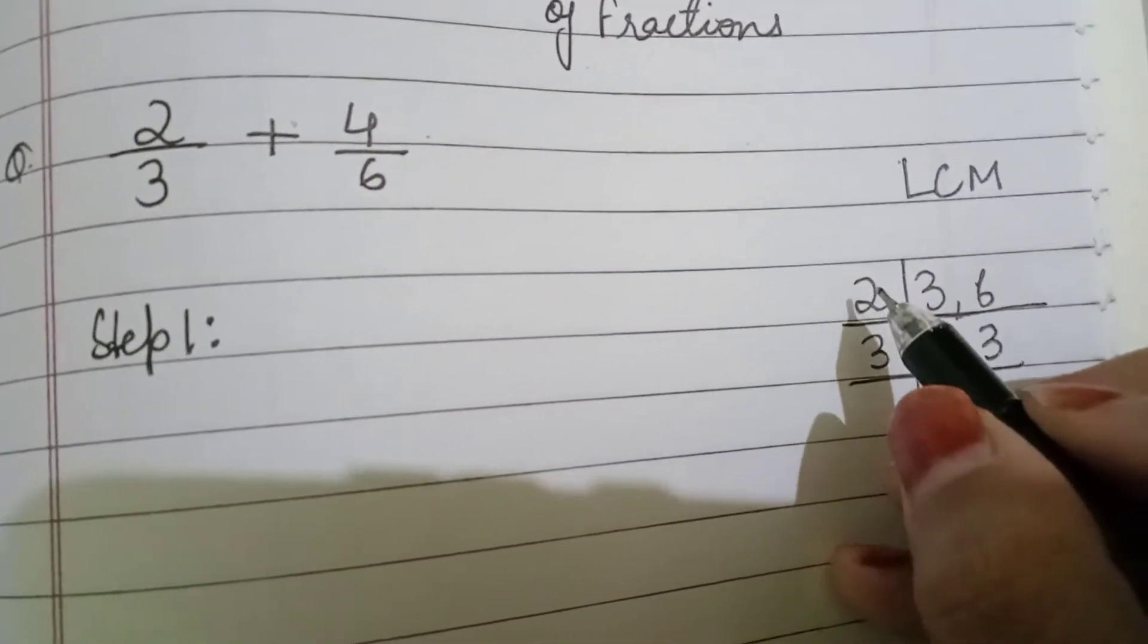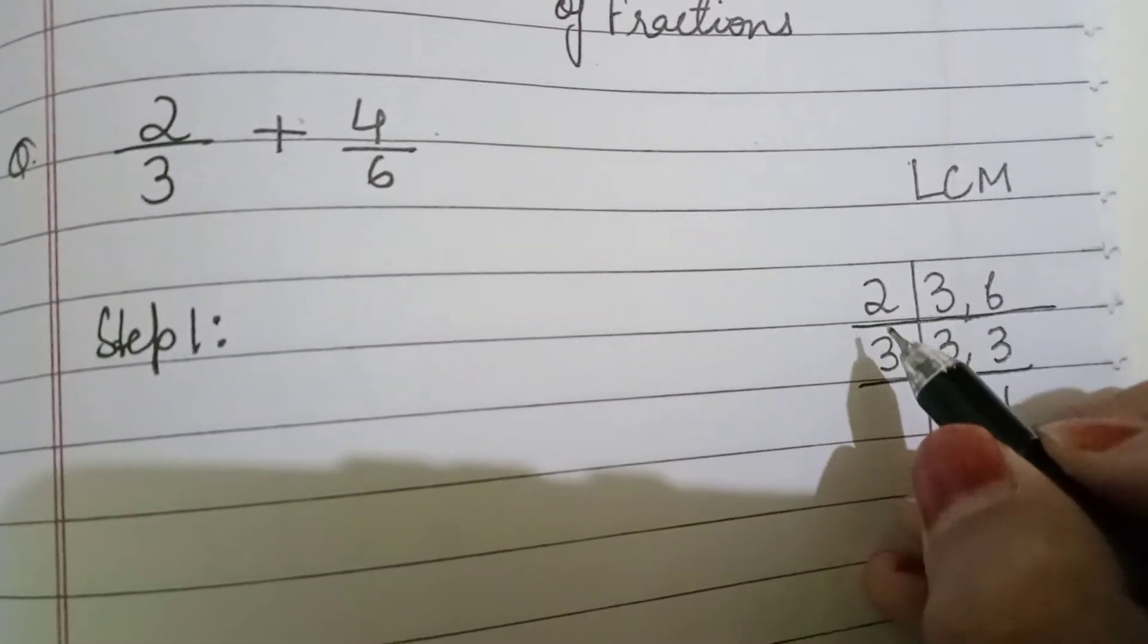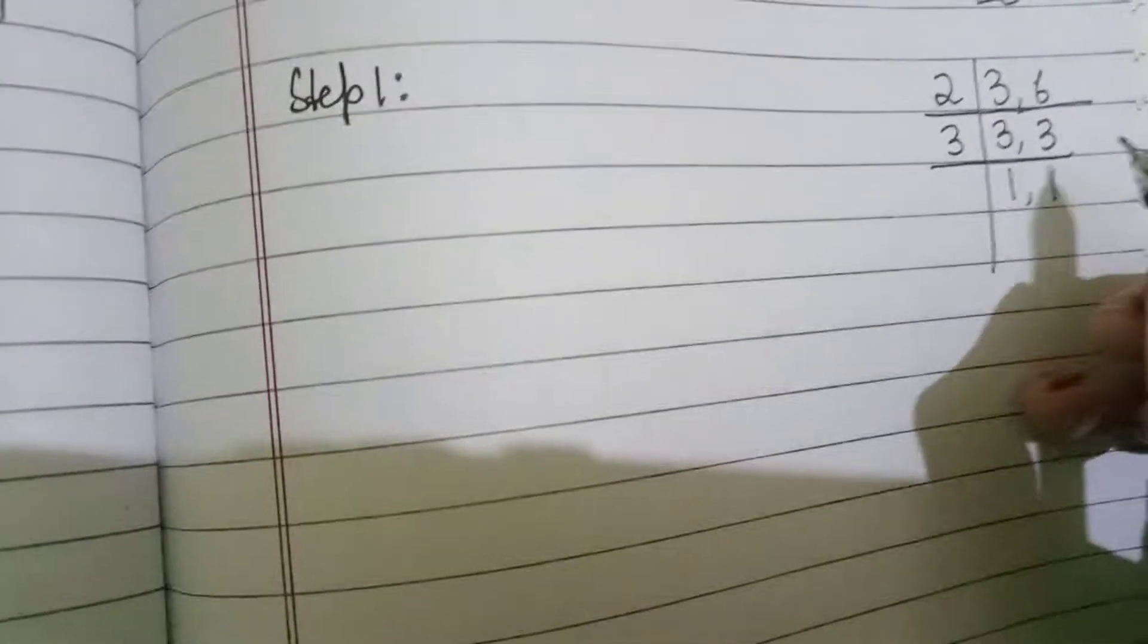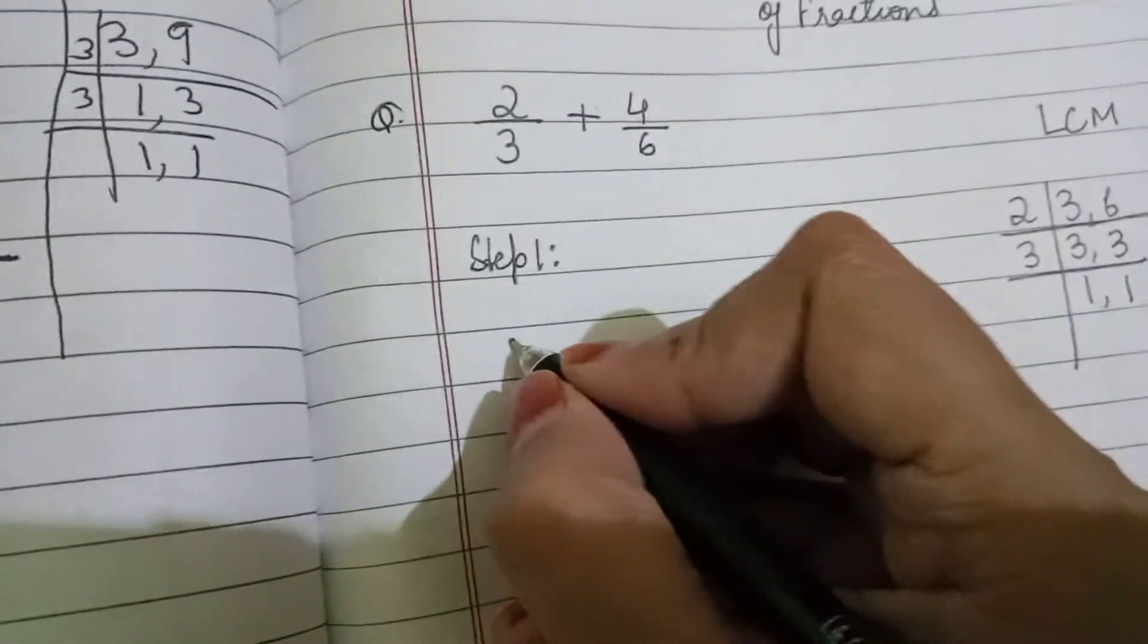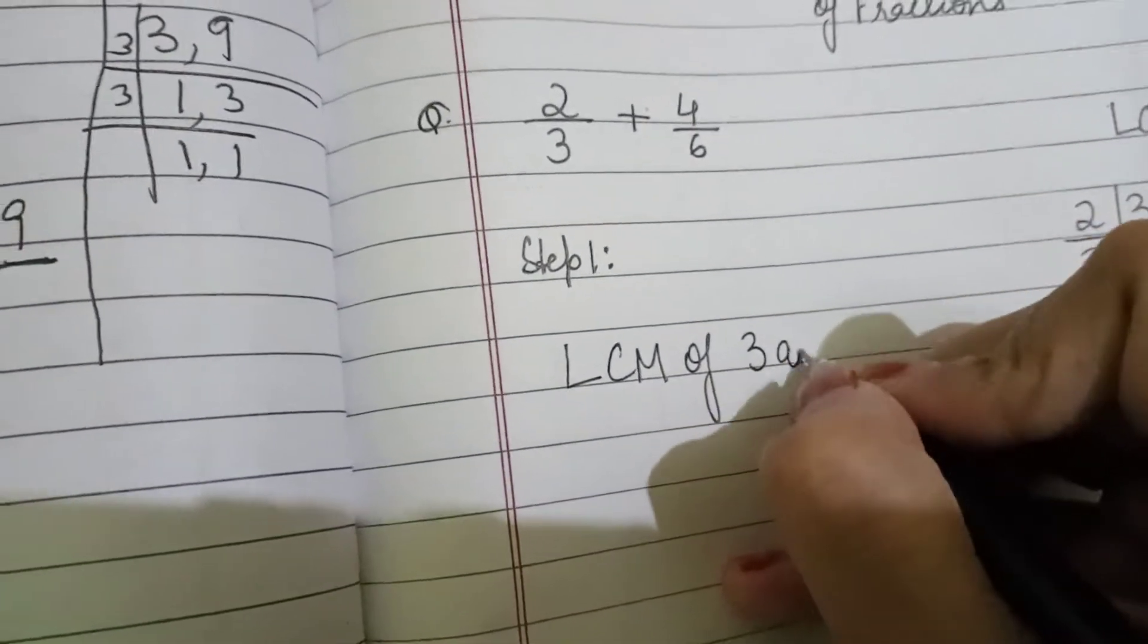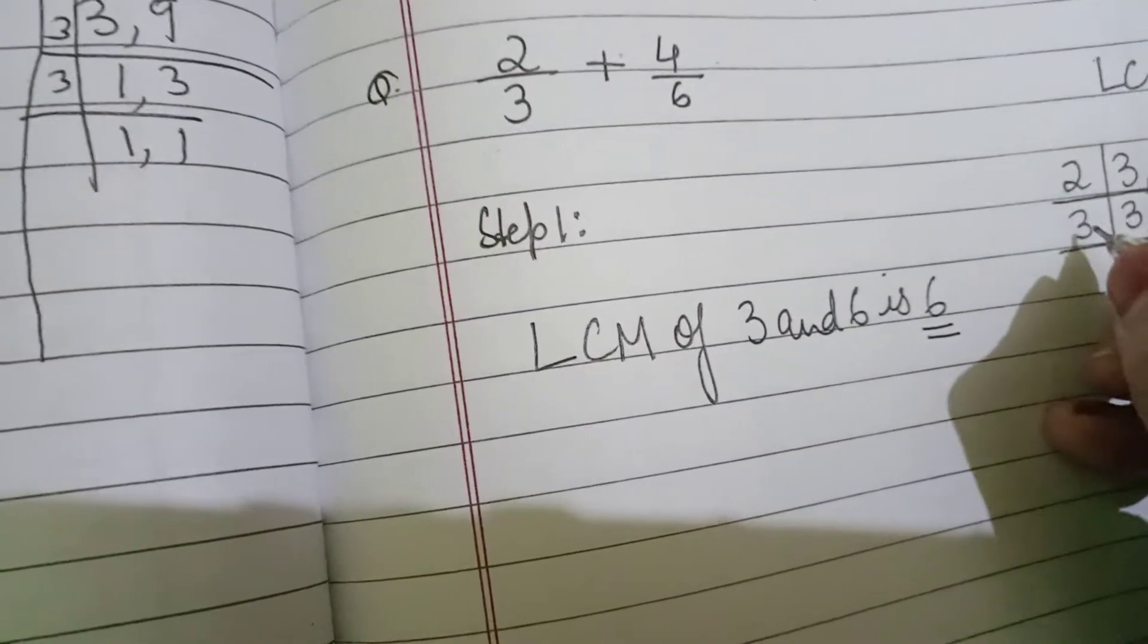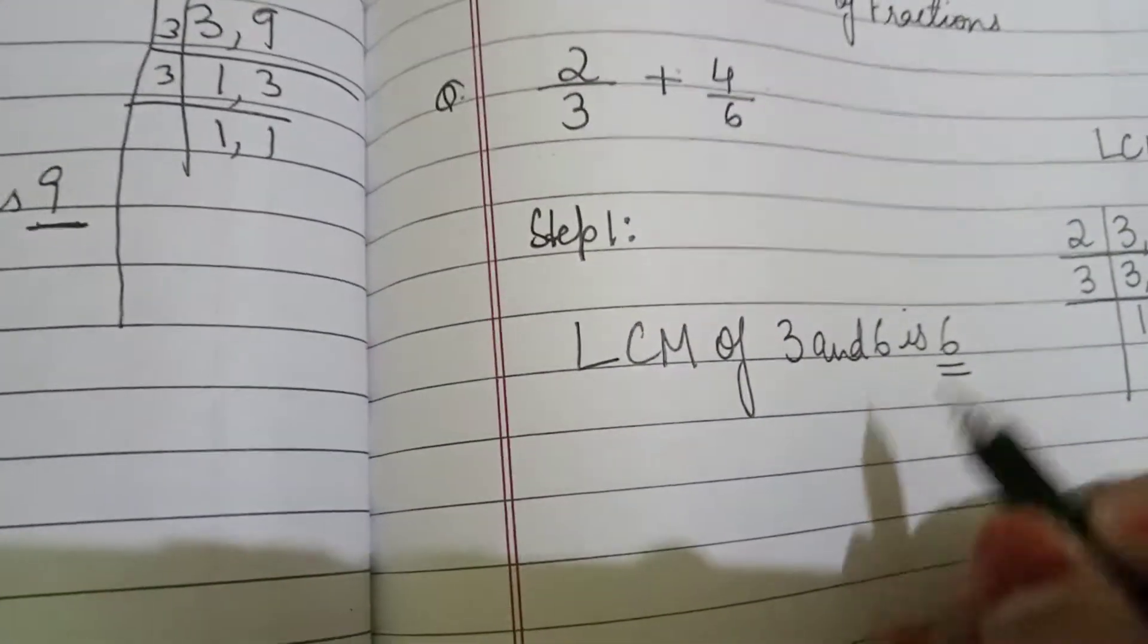You could have started with 3 and then 3, 2's and then 3, 1's. But the correct order will be, if there is any even number, you should always start with 2. So now, 2 into 3 is 6. So LCM of 3 and 6 is 6. This 2, 3 is 6. So this is the LCM.